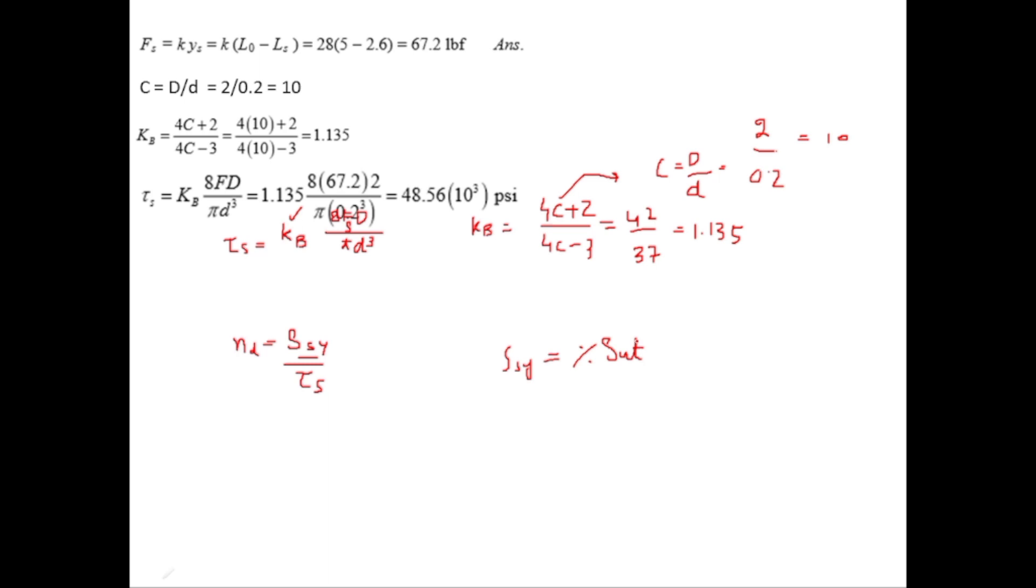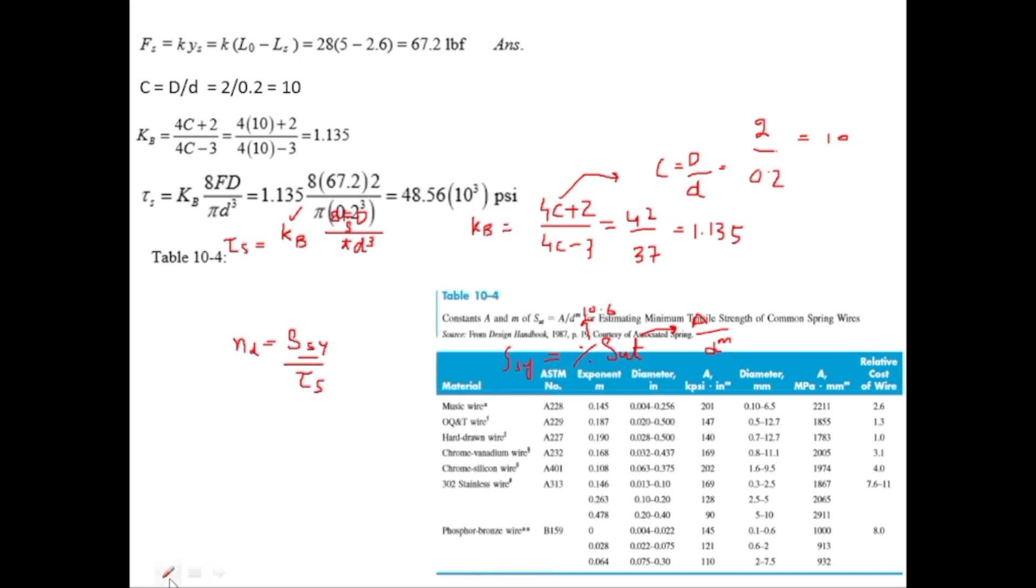In table 10.4 for oil-tempered wire spring, m value is 0.187 and a value is 147. So SUT equals 147 divided by 0.2 to the power 0.187, which gives SUT equals 198.6.